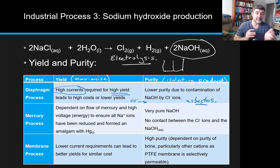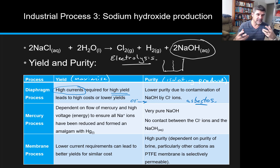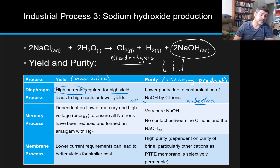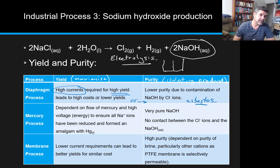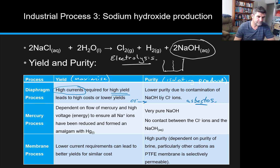So therefore the sodium and the chloride ions are in solution. As each of these is being oxidised or reduced, what we are finding is that some of those chloride ions, rather than being removed as chlorine gas, are actually remaining in our final solution, and therefore contaminating the purity of our final product.